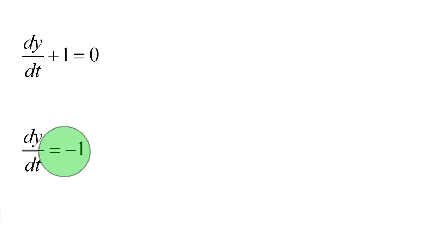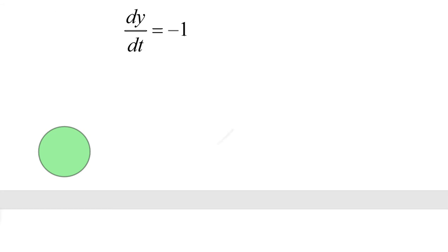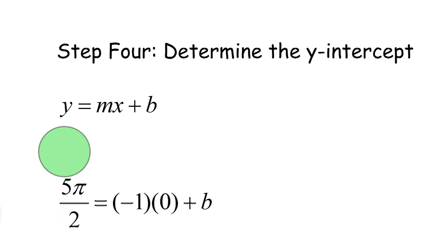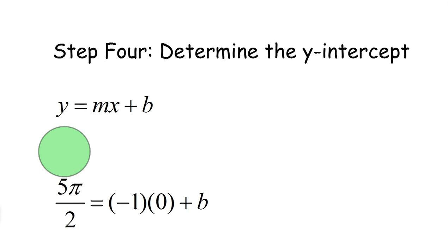And this will, indeed, give us the slope, the m value of our tangent line, if we want to write it in y equals mx plus b form. Of course, we need to find the y-intercept of that line. Let's go ahead and go to that step, which is to determine the y-intercept.